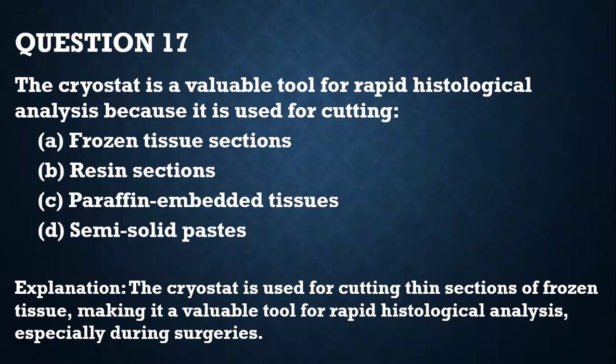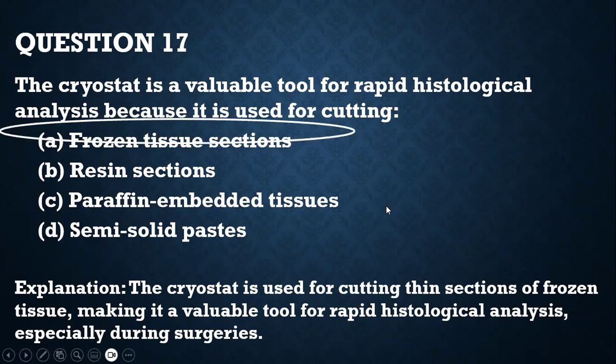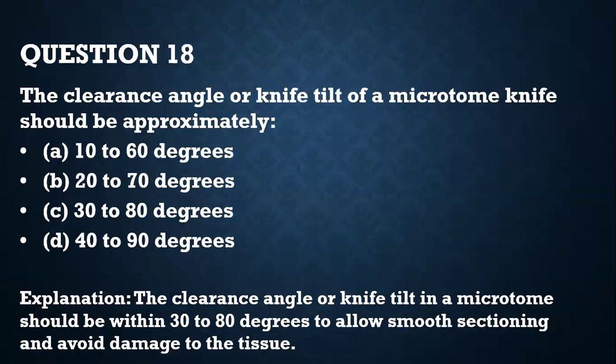Question 17. The cryostat is a valuable tool for rapid histological analysis because it is used for cutting: A — frozen tissue sections; B — resin sections; C — paraffin embedded tissues; D — semi-solid paste. From the word 'cryo' meaning cold, a cryostat is a microtome that cuts frozen tissue sections, and it's usually used when you need rapid histological analysis, especially during surgery.